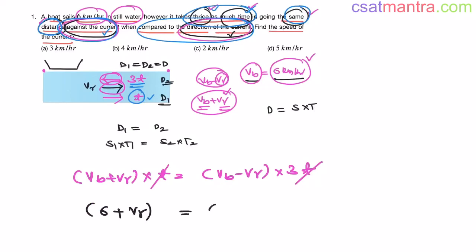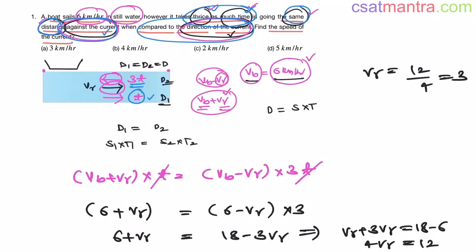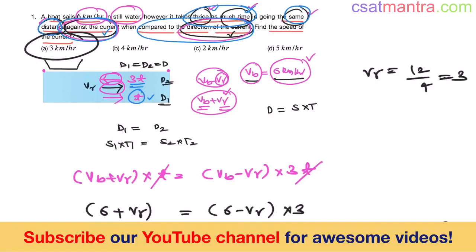Solving: VR + 3VR = 18 − 6, so 4VR = 12, therefore VR = 3 km per hour. The answer is option A — 3 km per hour. This is a very easy problem. With practice, you can solve it in less than 30 seconds. Always think in terms of the TSD scenarios for time, speed, and distance problems.